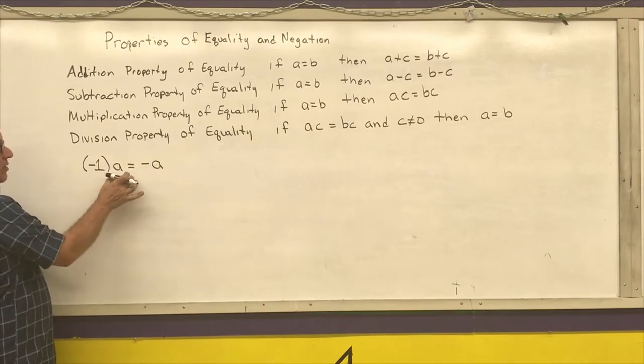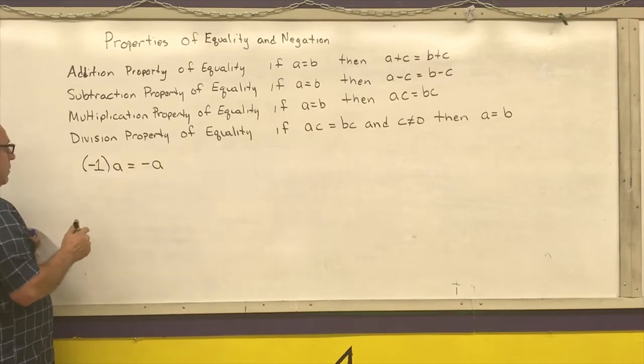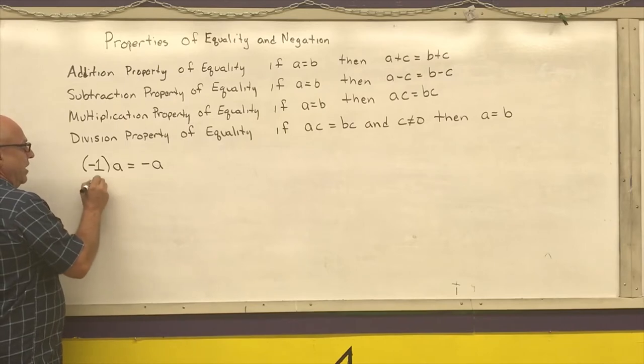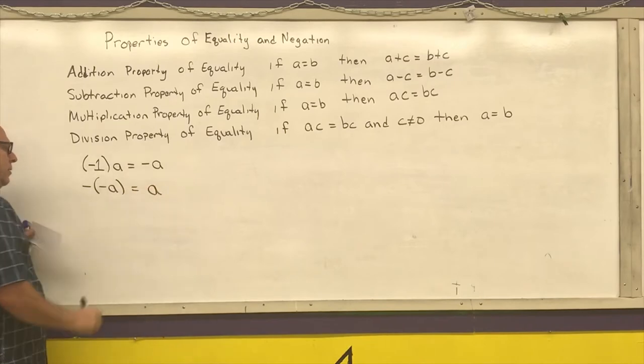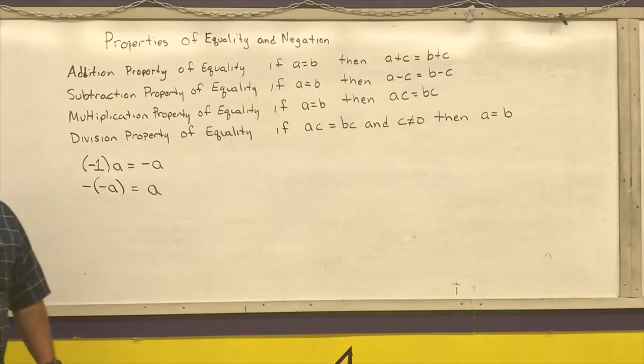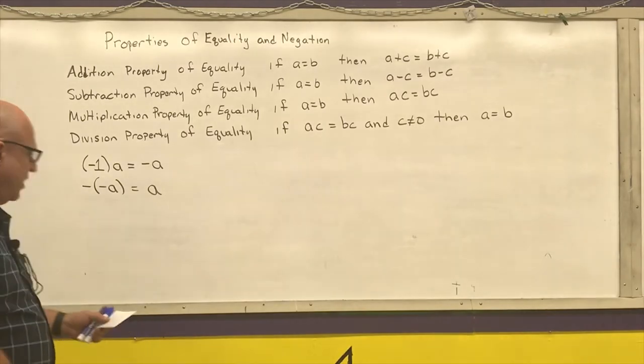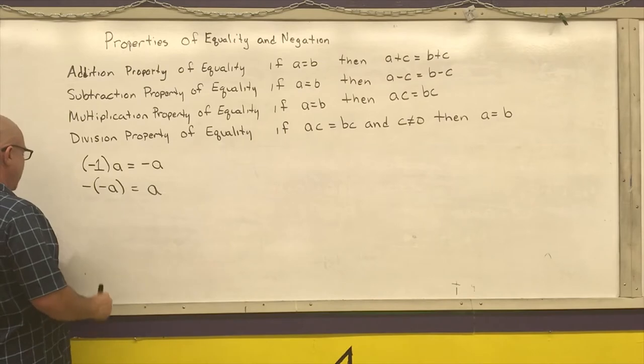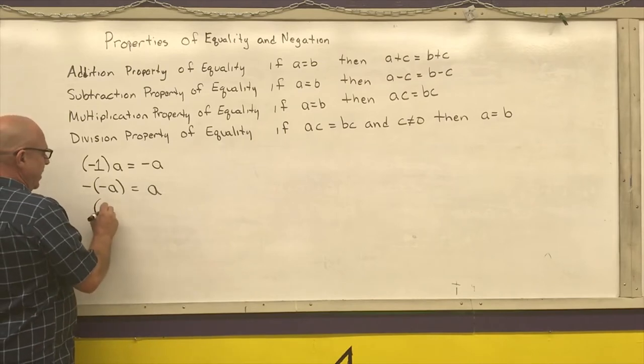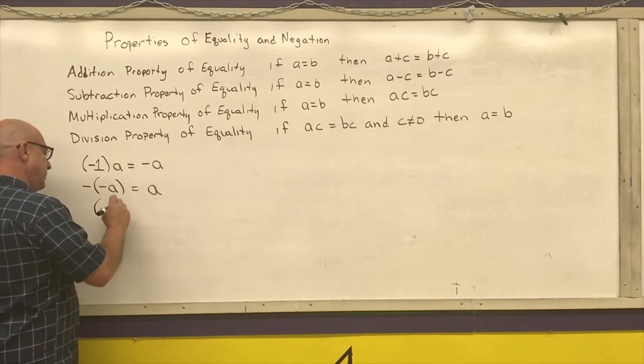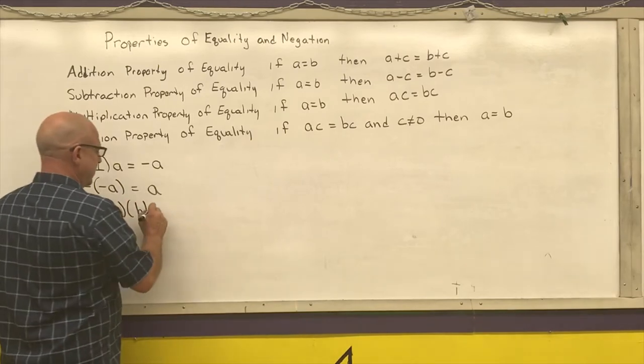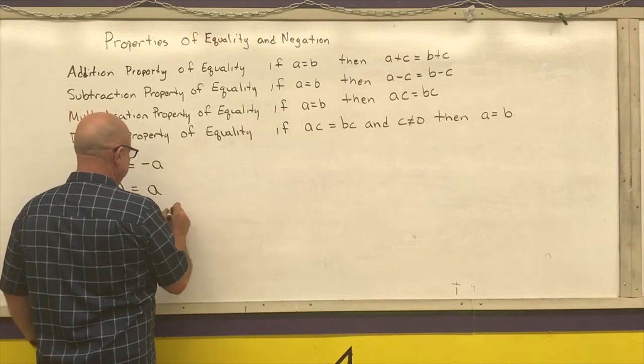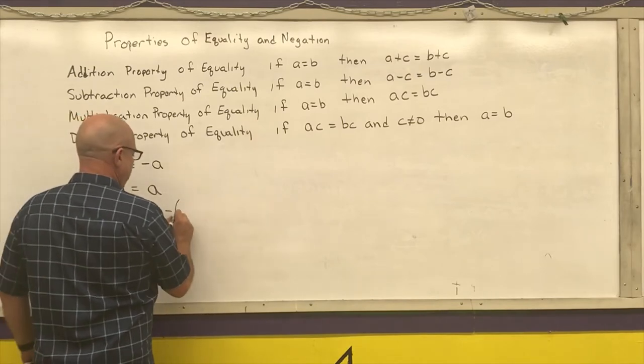Negative A means the same thing as negative one times A. A negative of a negative number is equal to a positive number. And now we are going to use some of the properties of real numbers with these two negation properties. If I have a negative number times a positive number, that can be rewritten as the negative of that product.